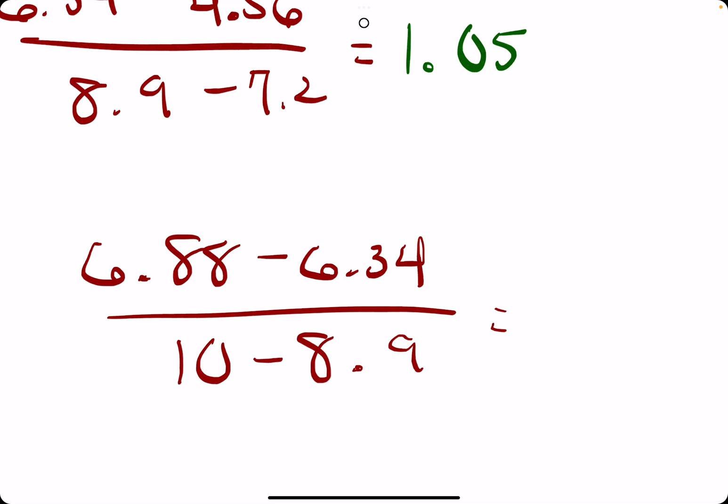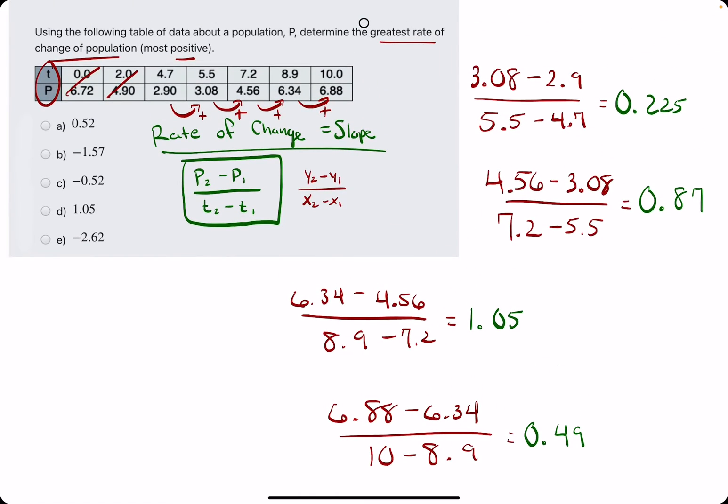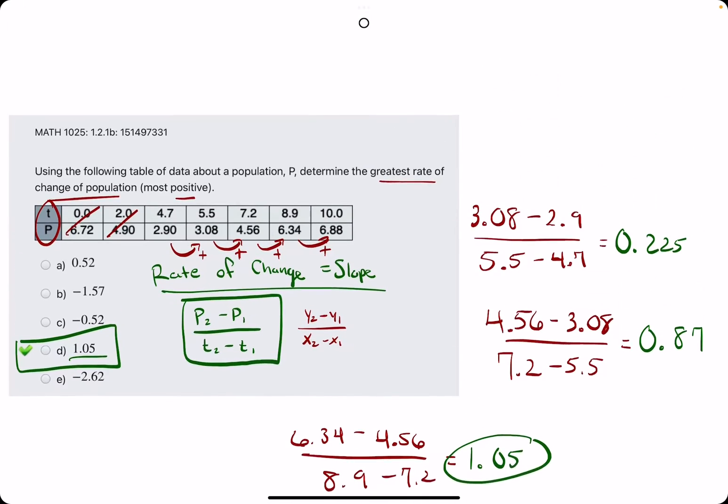So looking at these values we are looking for the most positive, the highest positive value. So that would be 1.05, which we do see an answer for. So we break out the eraser and we do see that D is our answer.